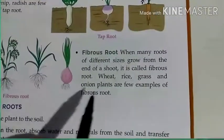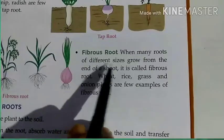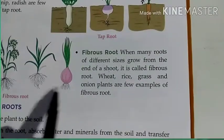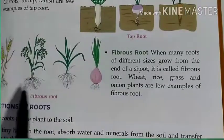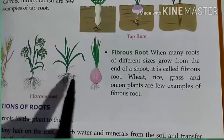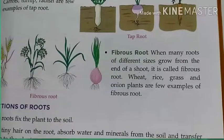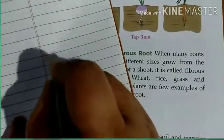Now, what is fibrous root? When many roots of different sizes grow from the base of the stem — a lot of bush-like roots, just like hair. This is a root system where there is no single main root; instead there are many roots growing together. This type of root is called fibrous root.